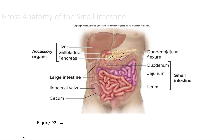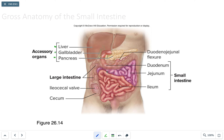The next part is the small intestine. There are accessory organs such as the liver, gallbladder, and pancreas that play a role in digestion. The total length of the small intestine — including the duodenum, jejunum, and ileum — is about 20 feet. It extends from the pyloric sphincter of the stomach to the ileocecal valve of the large intestine.